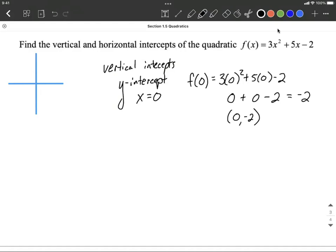Next, let's think about the horizontal intercepts. So horizontal intercepts means the same thing as x-intercepts. There are some different ways to ask the same question. X-intercepts typically means an ordered pair.